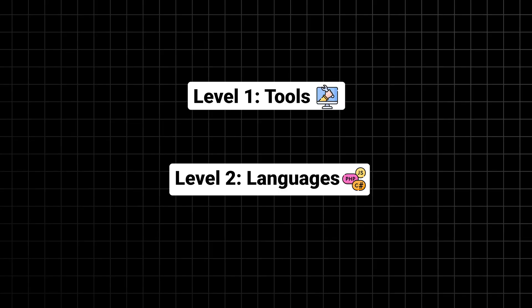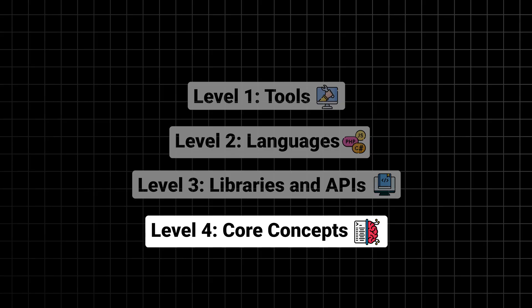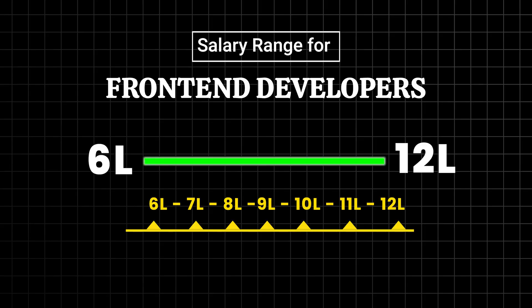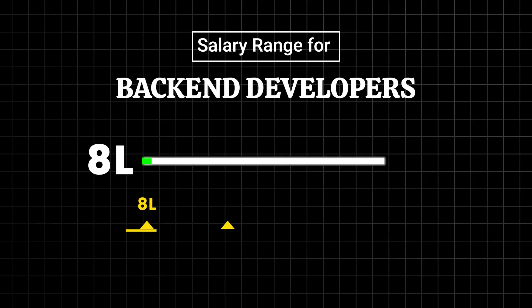Many beginners get distracted by levels 1 to 3 — shiny unnecessary tools and libraries — because there's always a shiny new tool which feels easier to use. But level 4 understanding of concepts is what actually helps you build great products, get a job, and grow in your career. So avoid learning too many frameworks all at once. Stick with one frontend and one backend framework initially. Web development continues to be a top field in 2025. Frontend developers have an average salary of 6 to 12 lakhs per annum in India, and backend developers have an average of 8 to 15 LPA.